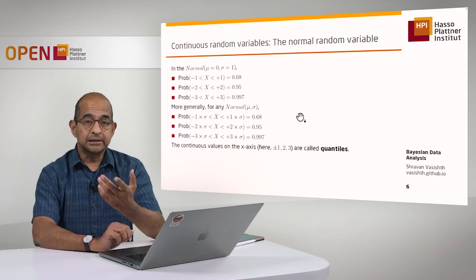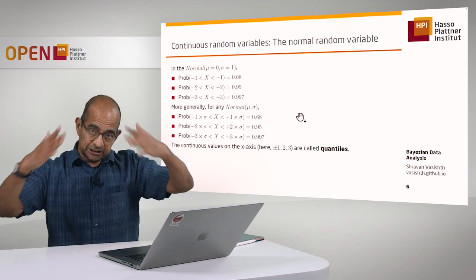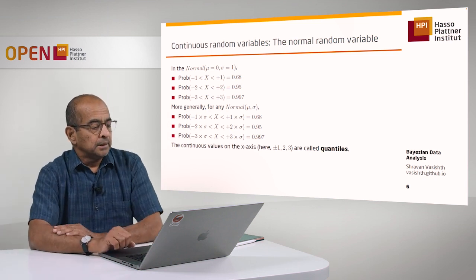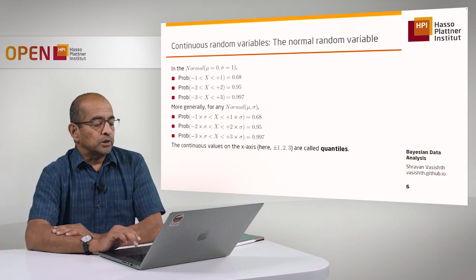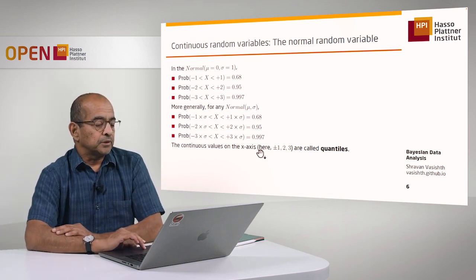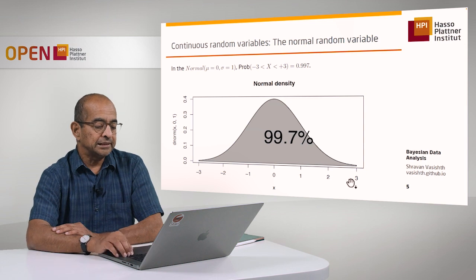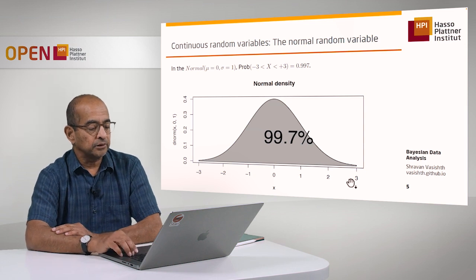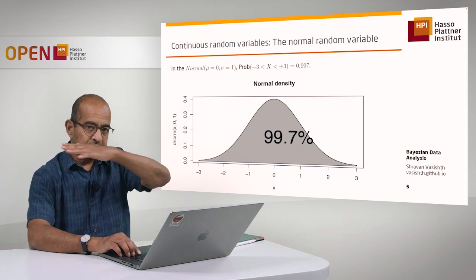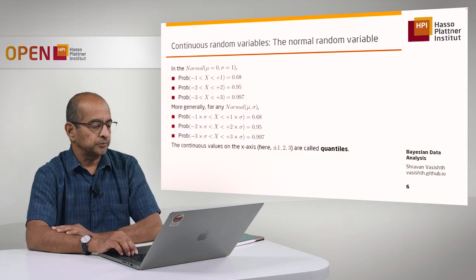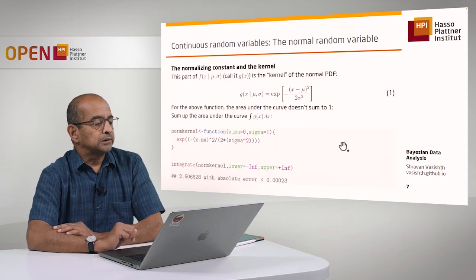This is a fact about the normal distribution that comes about because of the shape of this distribution. The values on the x-axis I'll call quantiles — you should remember that these are just the elements in the support of x in this particular distribution.